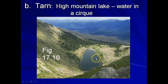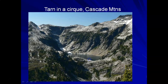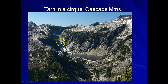Another landform is called a tarn. It's a high mountain lake where water has accumulated in that cirque basin. Here's a tarn in the Cascade Mountains — Cascade has several national parks and peaks around 14,000 feet, so there are many glacial features there. Here's a beautiful example of a cirque in one of the Cascade Mountains in Washington State.